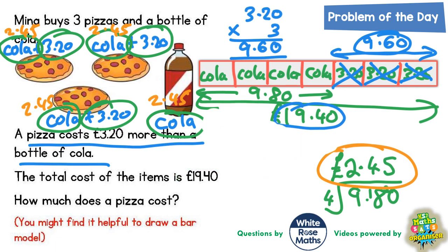So the final step to find the cost of the pizza is to take the bottle of cola cost, which is £2.45, and add on the £3.20 to it. Five plus zero is five, four plus two is six, and two plus three is five. So the final answer, a pizza costs £5.65.